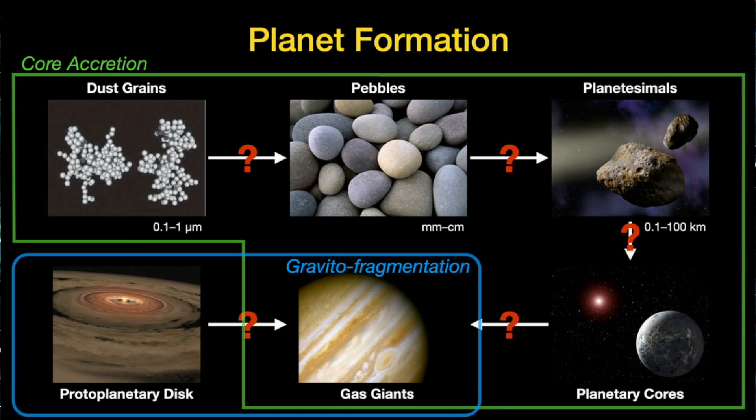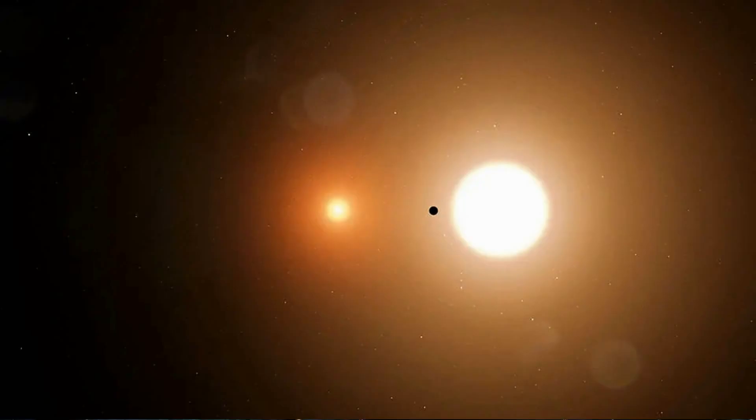Scientists believe they might arise from the same protoplanetary disk of gas and dust that gives birth to stars. Just like single star planets, circumbinary planets can come in various sizes and compositions. Some might be rocky like Earth, while others could be gas giants like Jupiter. Living on a circumbinary planet might experience dramatic swings in temperature and radiation depending on its position relative to the two stars. However, some scientists believe certain configurations could still harbor conditions suitable for life.